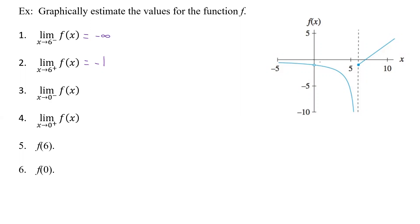As we approach 0 from the left — going this way — we get to negative 1. And as we approach 0 from the right — coming this way — we get to negative 1 again. That's how we can use a graph to determine the limits approaching from the left or from the right, looking at two different points on the same graph.